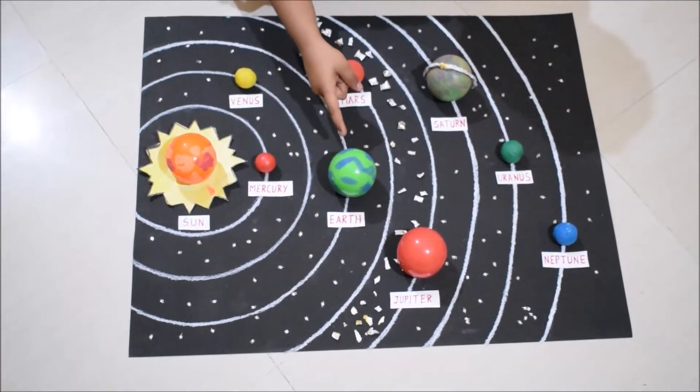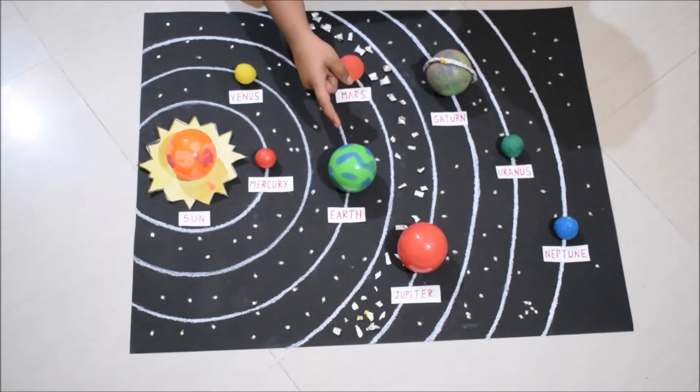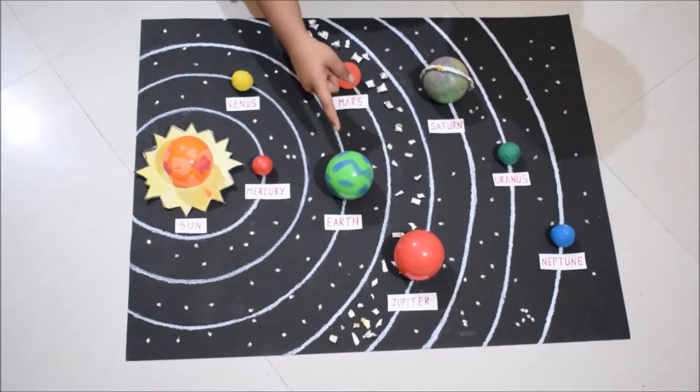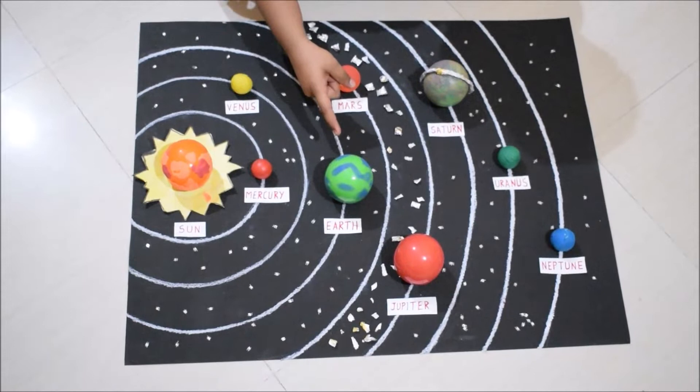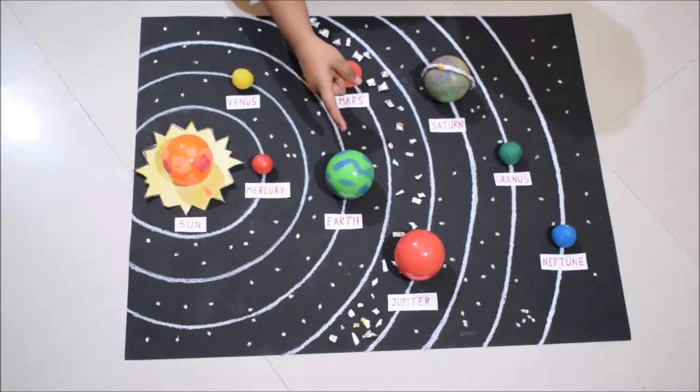Next comes our Earth. It is called the blue planet. It is unique because it has water, air, and life.